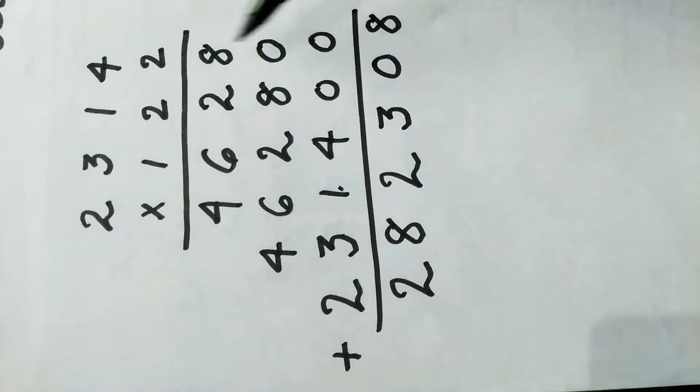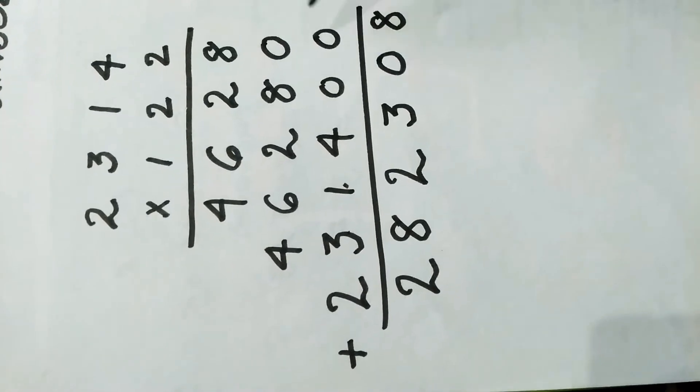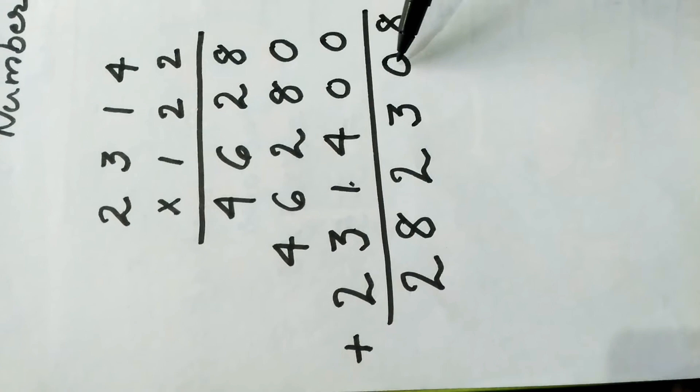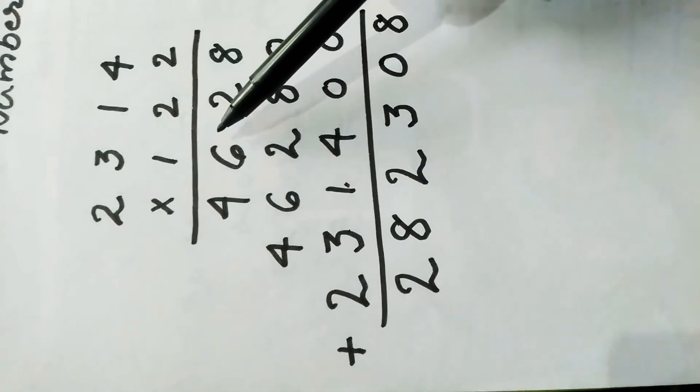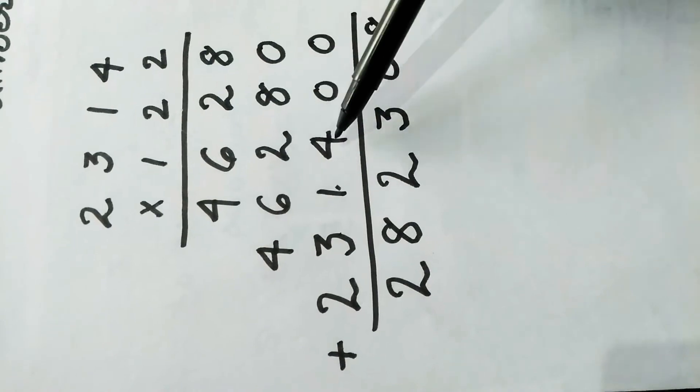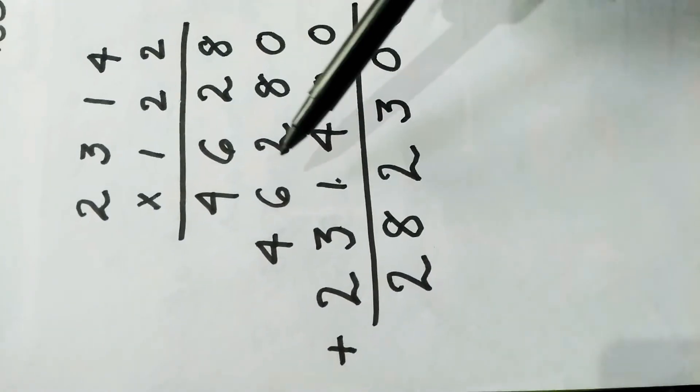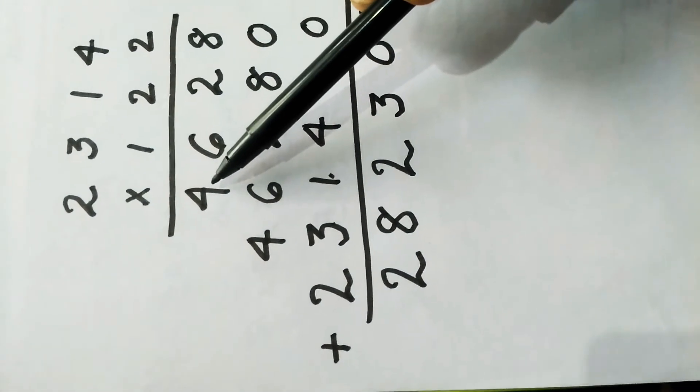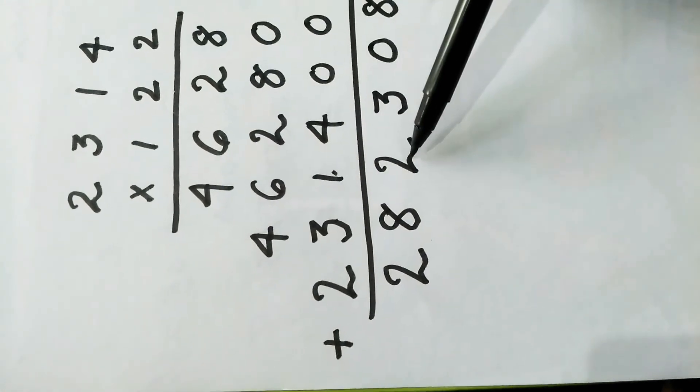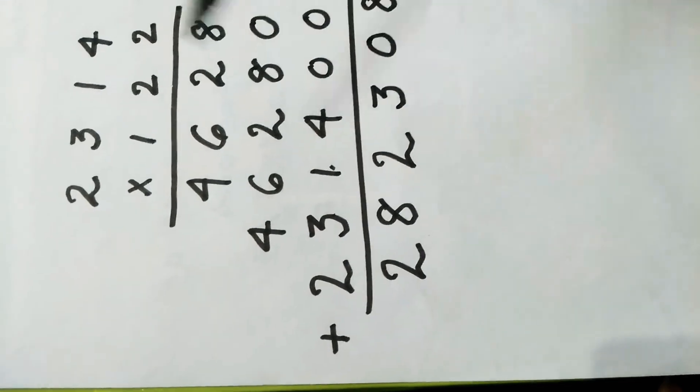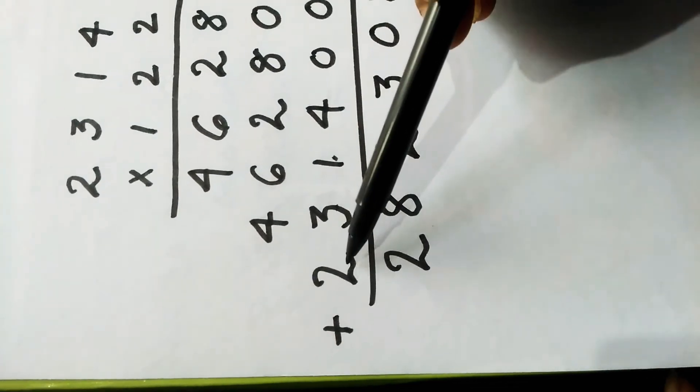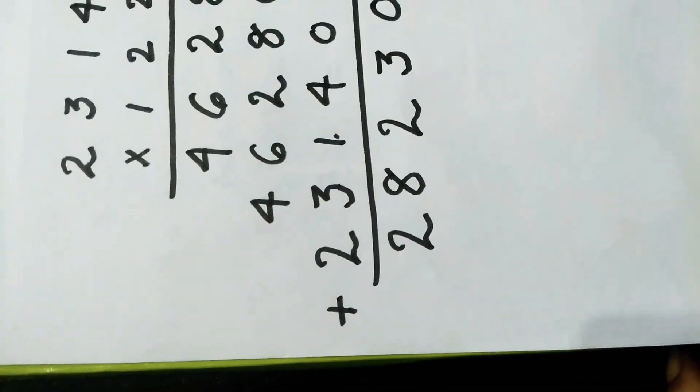Then we add these three products: 8, 8 plus 2 is 10, then 1 carry. 6 plus 1 is 7, 9, 9 plus 4 is 13. Then 4 plus 1 is 5, plus 6 is 11, 11 plus 1 is 12. Then we write 2 then 1 carry. 4 plus 1 is 5, 5 plus 3 is 8, and 2.